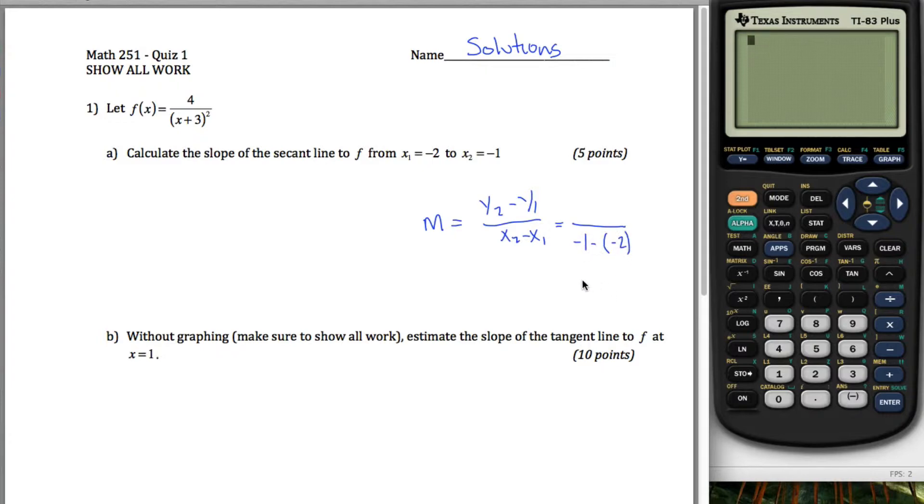is y2 minus y1 over x2 minus x1 and it's telling me that x2 is negative 1 and x1 is negative 2. So all I got to do is figure out y2 and y1 and I can figure those out because y2 is just f of x2 and x2 is negative 1, so y2 is just what comes out of this machine when I put negative 1 in, in other words, it's 4 divided by negative 1 plus 3 squared.